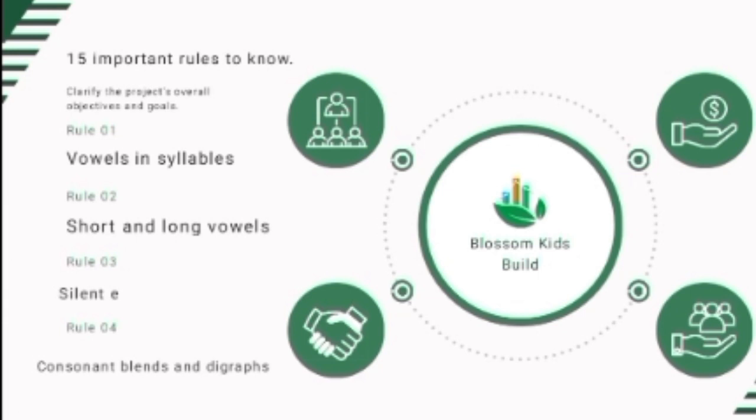We can learn more about syllables by counting them. When you want to teach syllables to your child, tell the child to clap or tap for each distinct sound in a word. Each clap or tap represents a syllable. For example, with the word 'elephant,' you clap: e-le-phant.